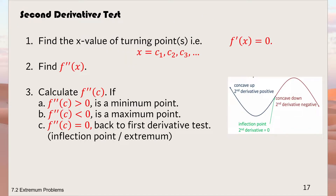In the second derivative test, you also find the turning point first, then you do the second derivative test by substituting the stationary x-value into f''(x). If f''(x) > 0, it is a minimum; if f''(x) < 0, it is a maximum. If f''(x) = 0, the test is inconclusive and you must go back to the first derivative test.